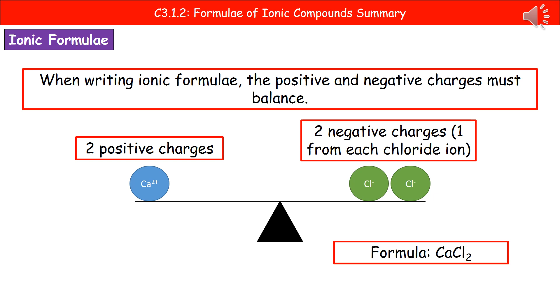When we write ionic formulae, we must make sure the positive and negative charges balance each other. That means if we've got two positive charges on, say, a calcium ion, then we must have two negative charges from whatever the negative ion is. In this example, we've got chloride ions. Chloride ions have a single negative charge, so to get two negative charges, we must have two chloride ions.